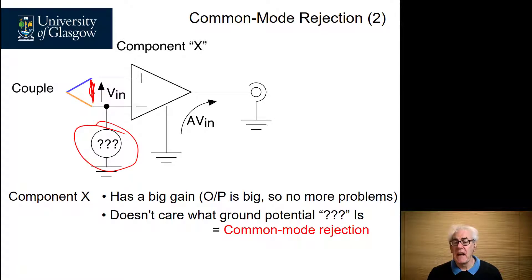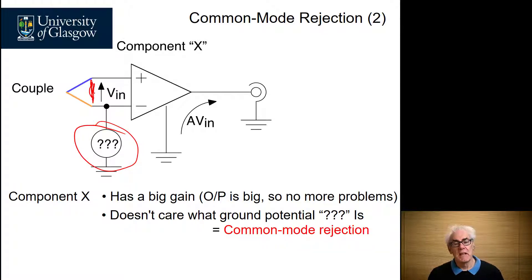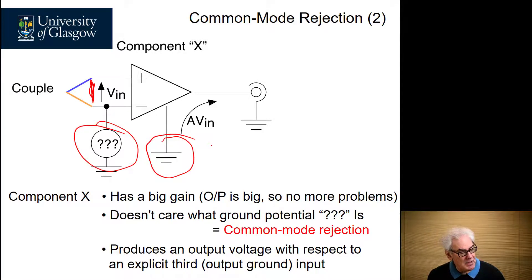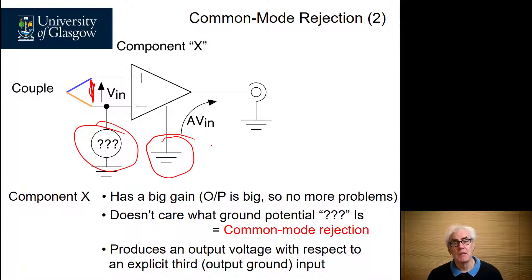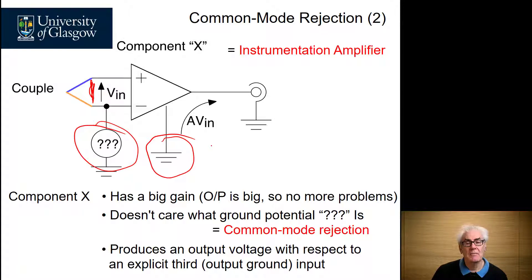Because it has high common mode rejection, it doesn't care what the ground potential is, which means that it can reject any noise. And the third thing is it has an explicit terminal connected to it, which the output ground is referred to. So we can be sure that the signal at the output of this node is exactly what we want.